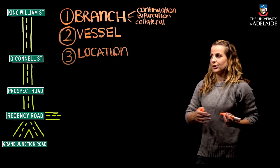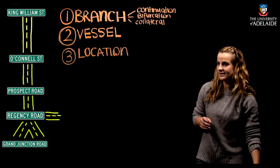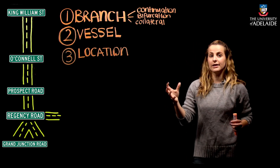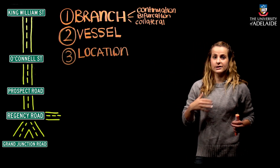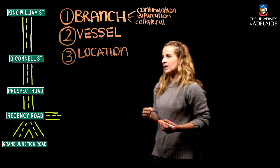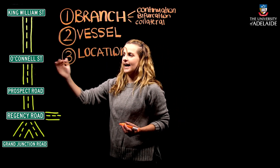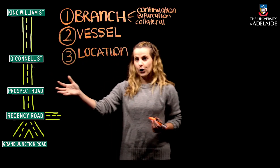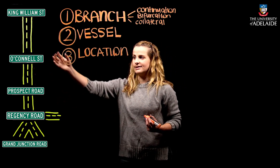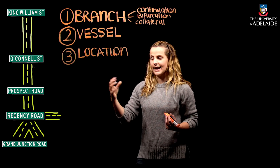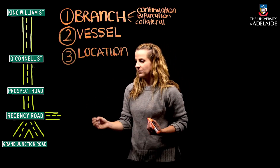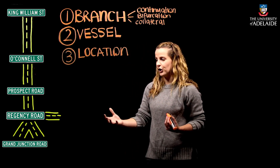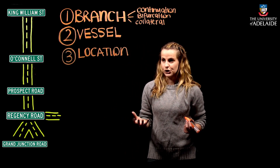The first type is a continuation. Consider our roadmap: you're driving along King William Road coming out of Adelaide CBD. When you reach North Adelaide, King William Road changes into O'Connell Street. As soon as you reach Prospect, the same road continues and changes name into Prospect Road. The end or termination of Prospect Road is then Grand Junction Road.